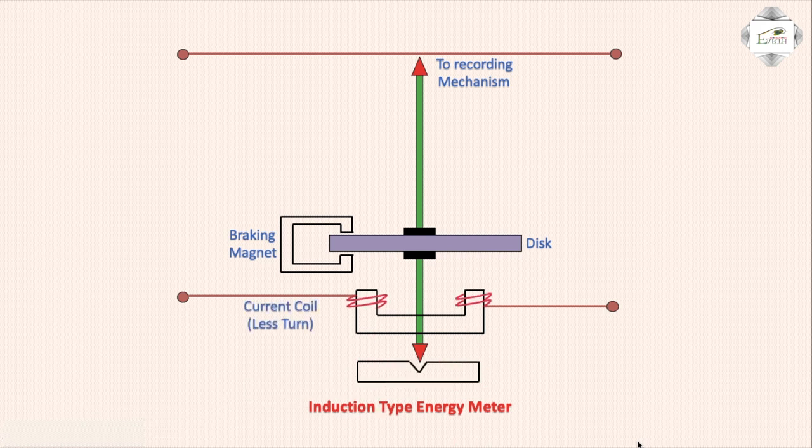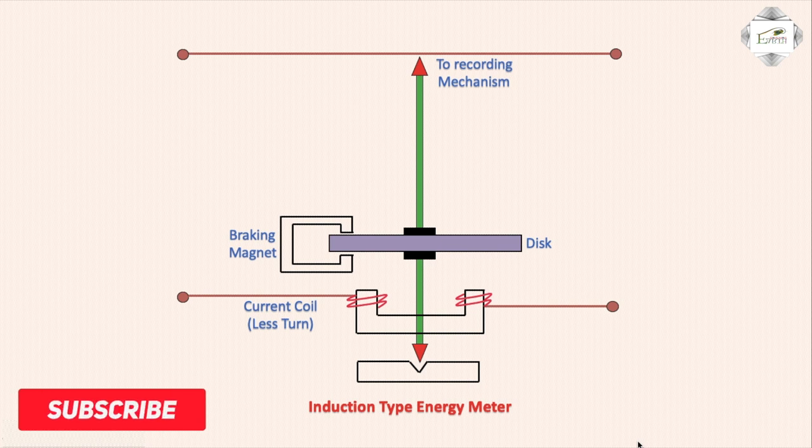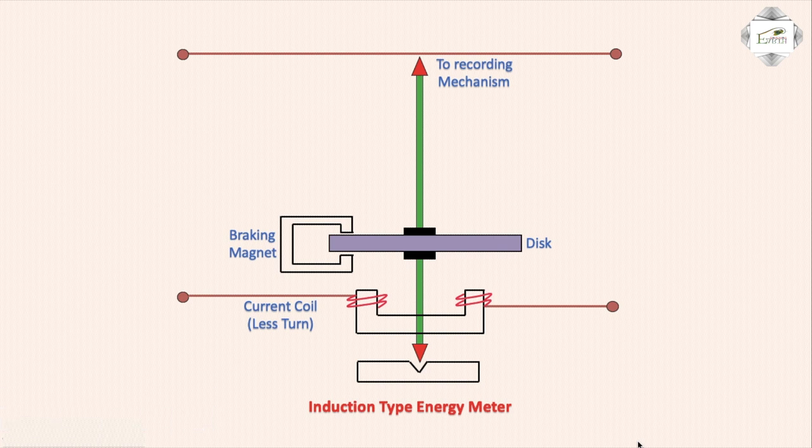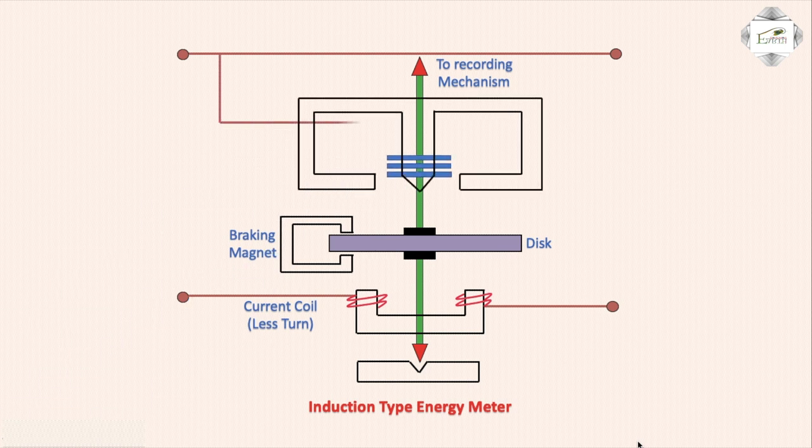This is the current coil. This is one kind of coil that checks the flow current, how much current flows through this line. It checks and helps the magnet. The flux controls the disc rotating. And then this is the second coil.